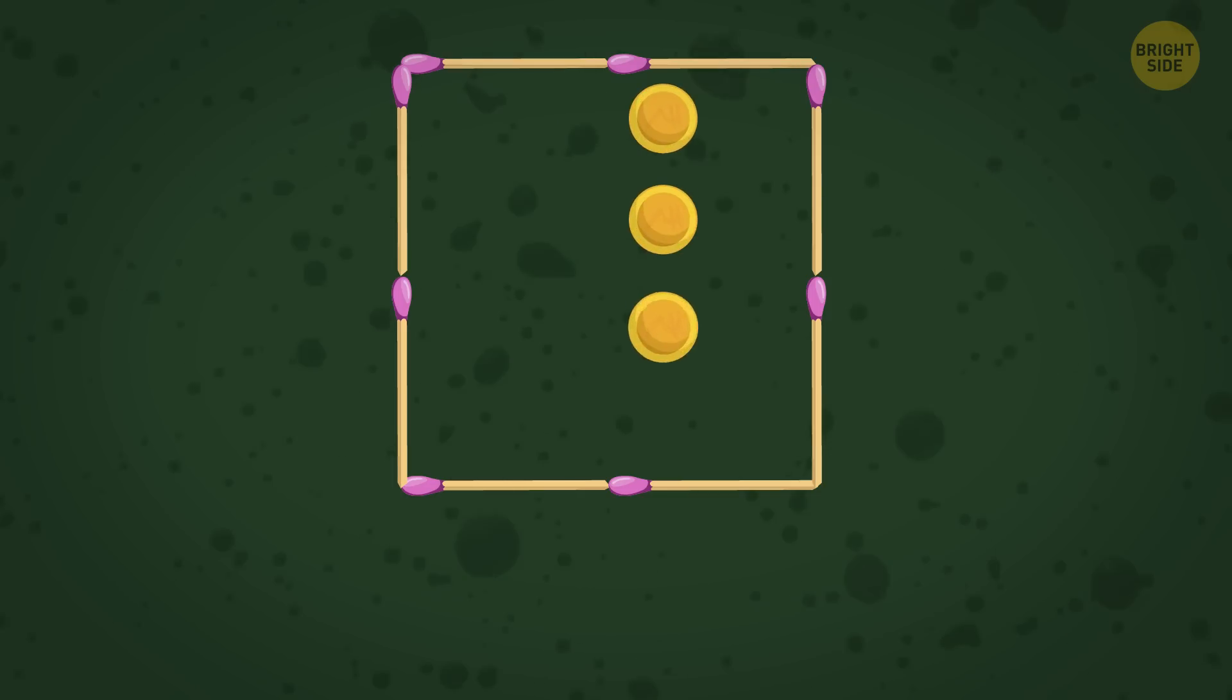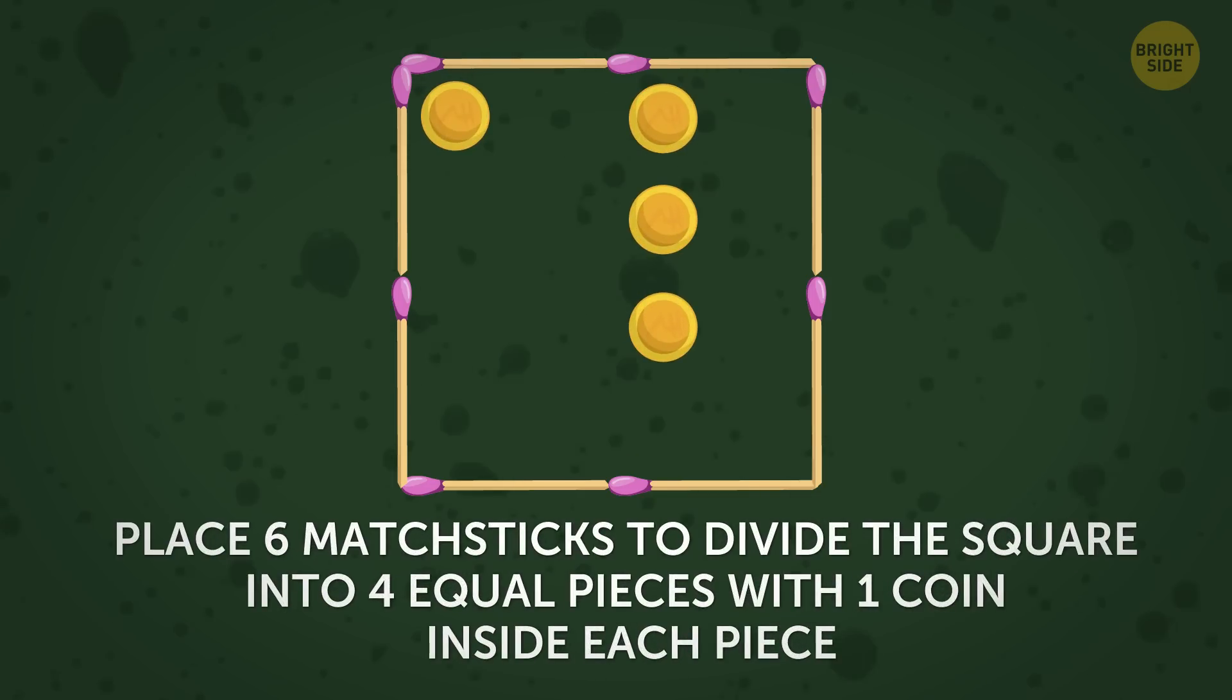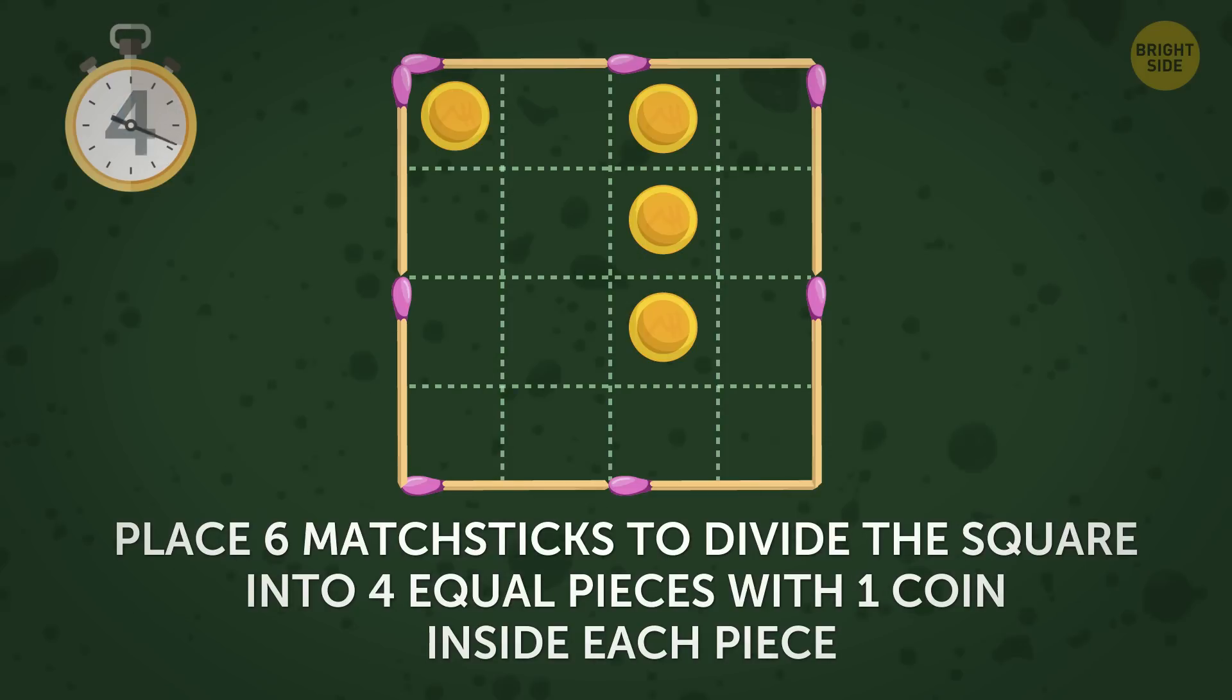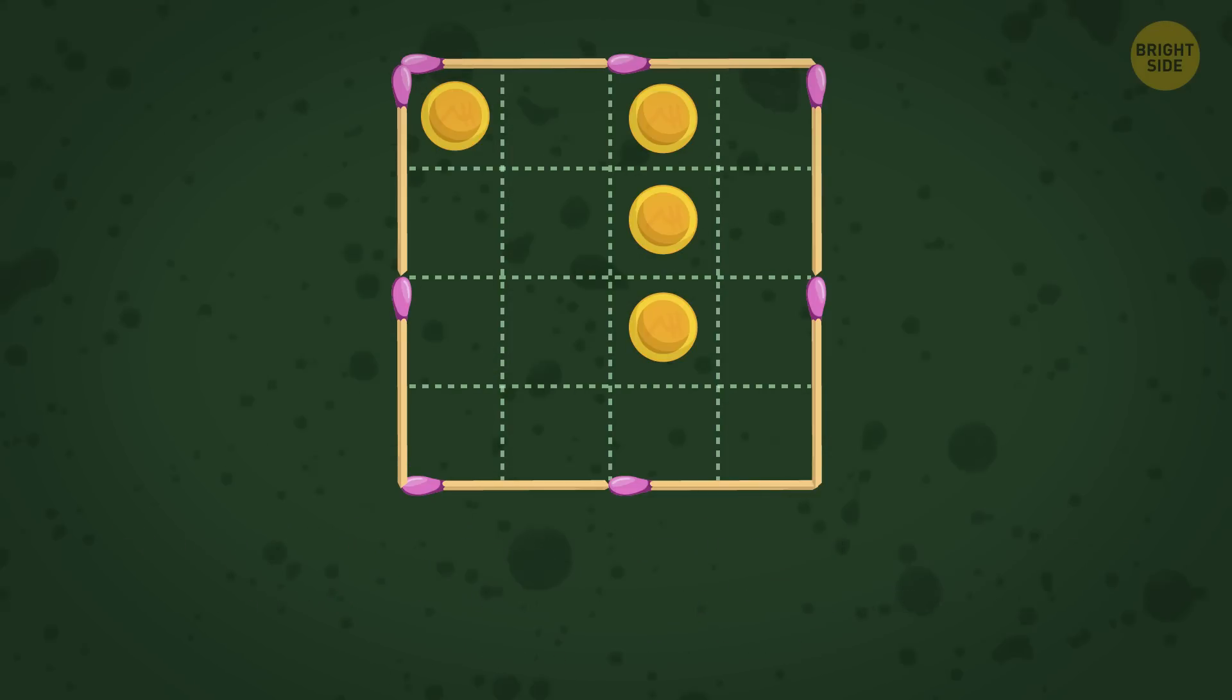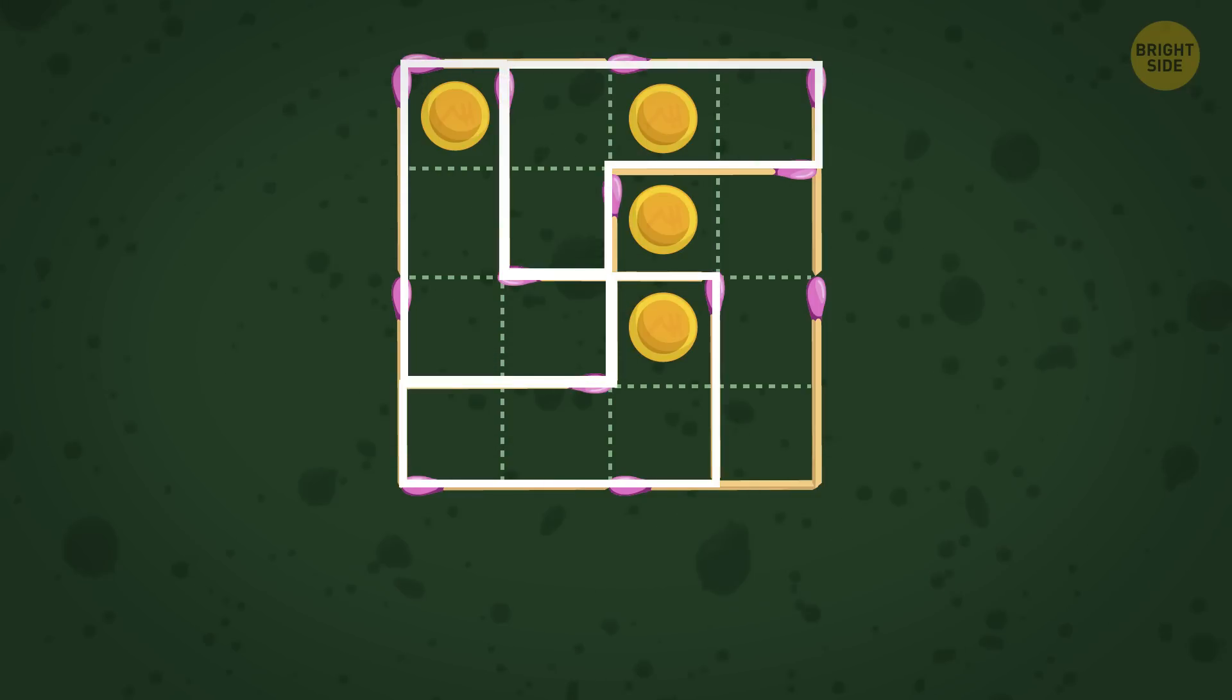The next challenge is to place 6 match sticks to divide the square into 4 pieces of equal area and the same shape with 1 coin inside each piece. Let's add some grid lines to make the task a little easier. Ready to see the solution? Here we go. With 4 match sticks you can easily divide the square into 4 similar pieces. But you're given 6 match sticks and the task was to separate all coins. That's why you should use more sophisticated shapes and place the match sticks like this. And we get 4 similar pieces with 1 coin in each.